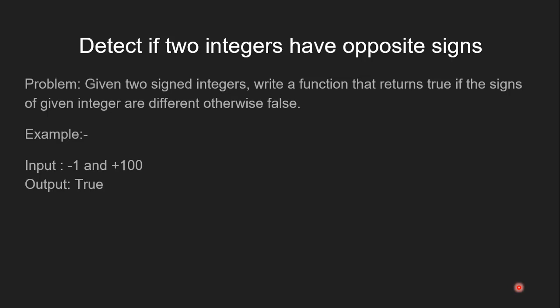For example, if the input is minus 1 and plus 100, the output is true because both the numbers are of different sign. If the input is minus 100 and minus 200, the output is false because both the inputs are of the same sign.